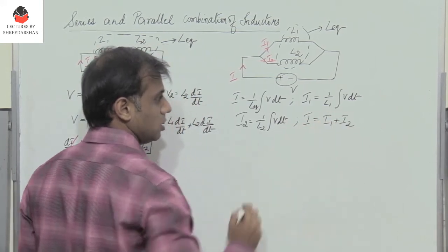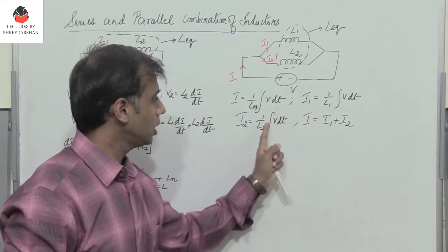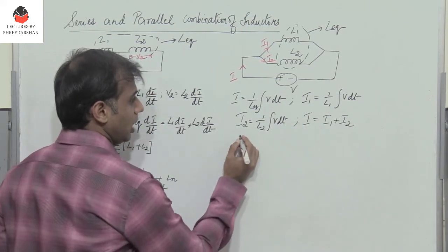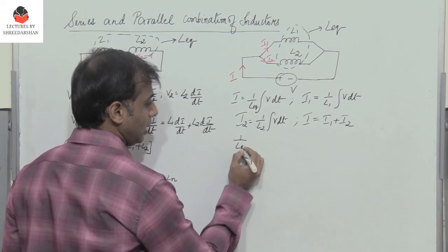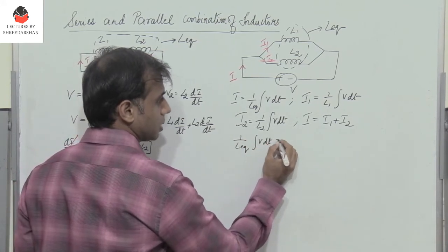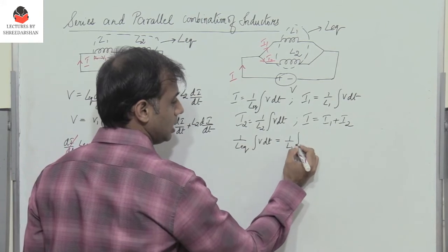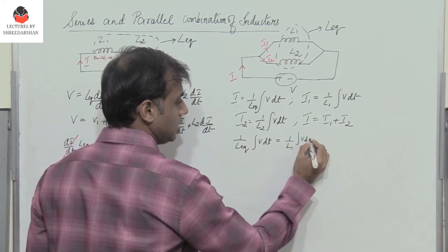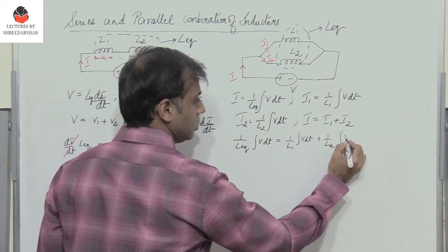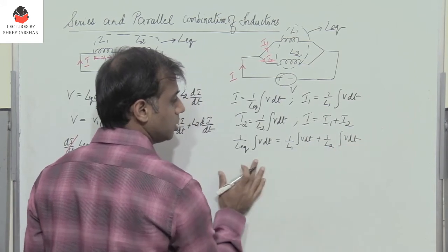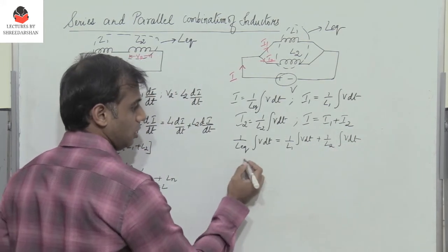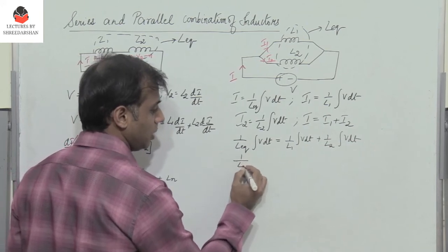We know that the total current I equals I1 plus I2. Substituting the expressions, we get 1/L equivalent times the integral of V dt equals 1/L1 times the integral of V dt plus 1/L2 times the integral of V dt. The integral of V dt is common on both sides, so we can cancel it.